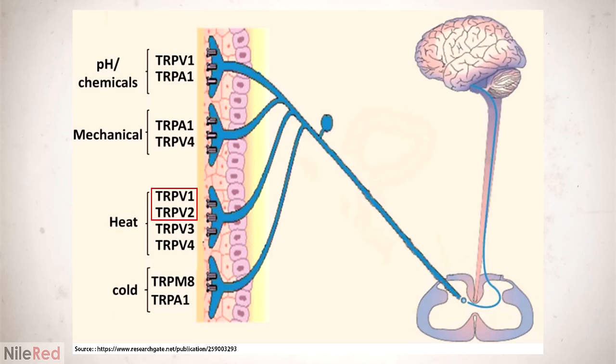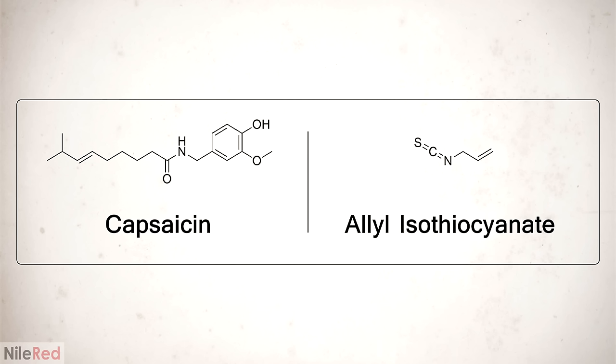Piperine and its isomer Chavacine are responsible for the spiciness of black pepper. It works by acting on the protein receptors TRPV1 and TRPV2 which normally sense heat. These receptors are found on nerve cells and when they're bound and activated by piperine, it tricks the brain into thinking it's sensing heat.